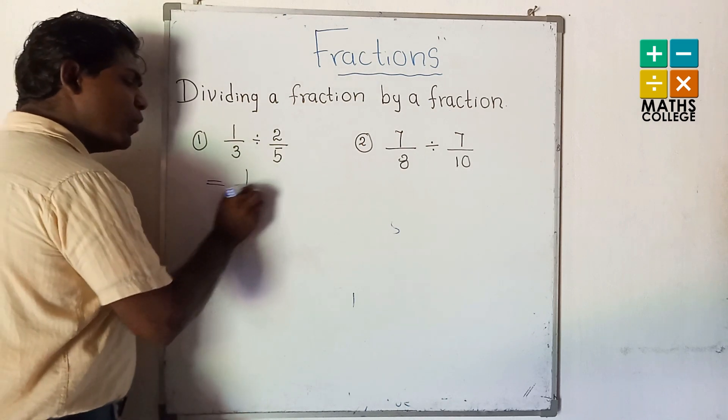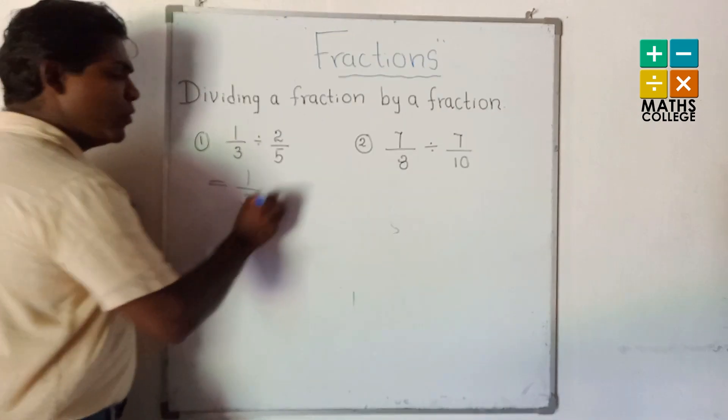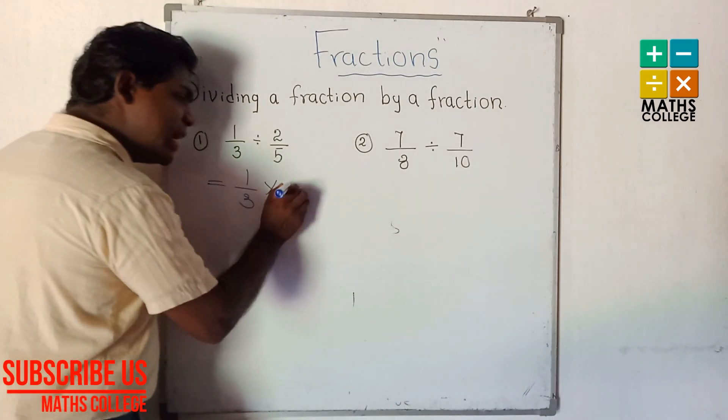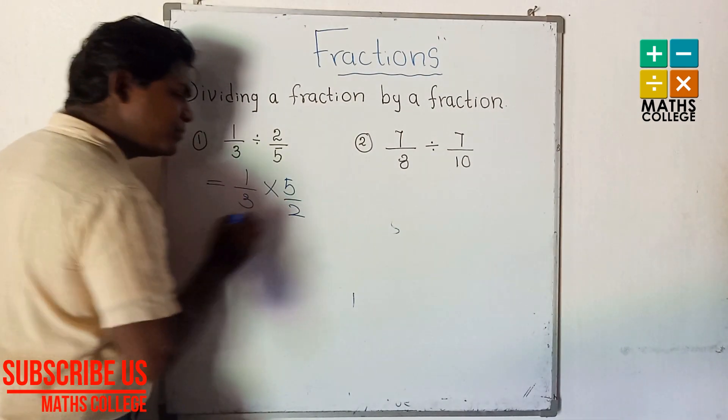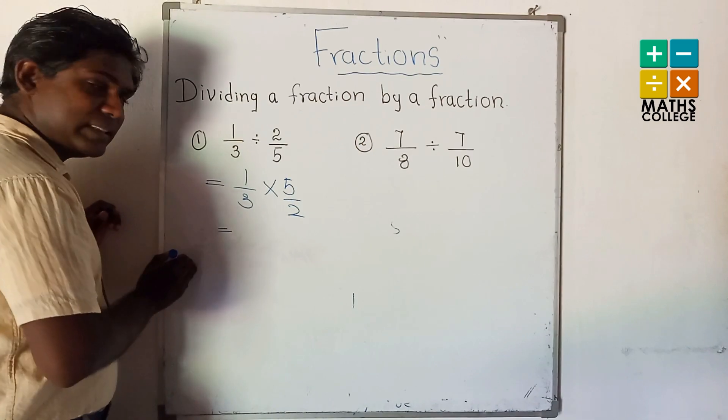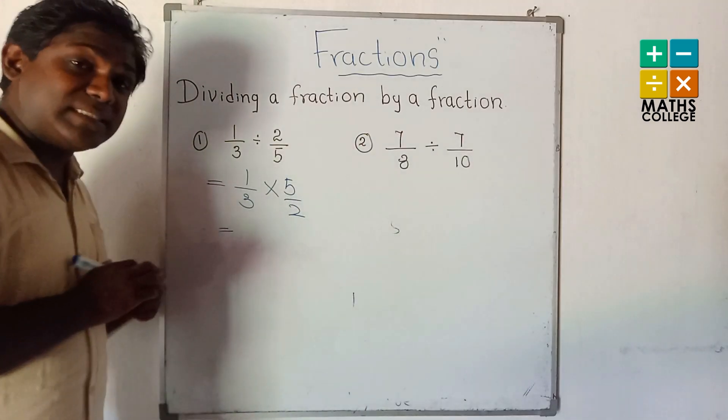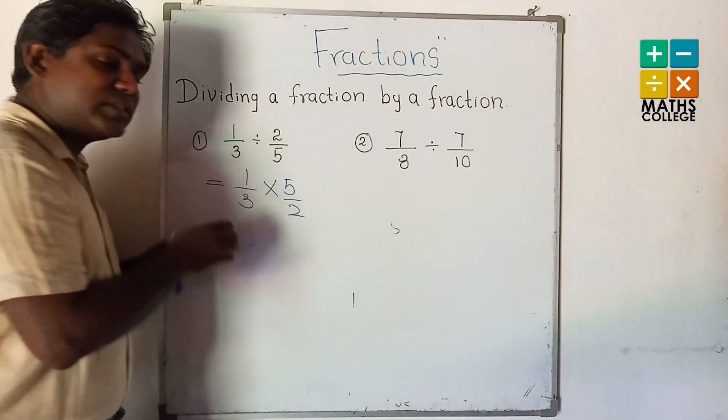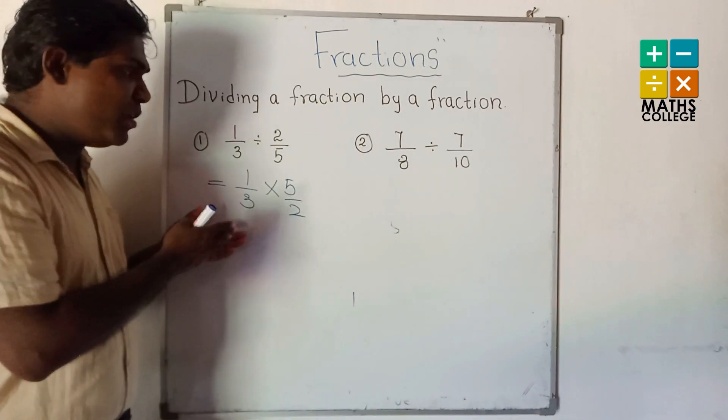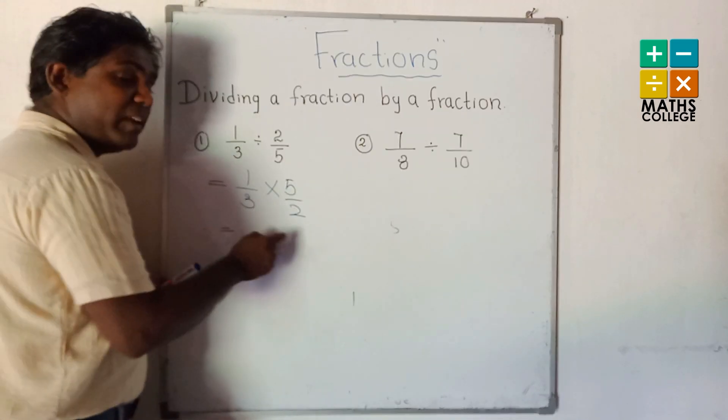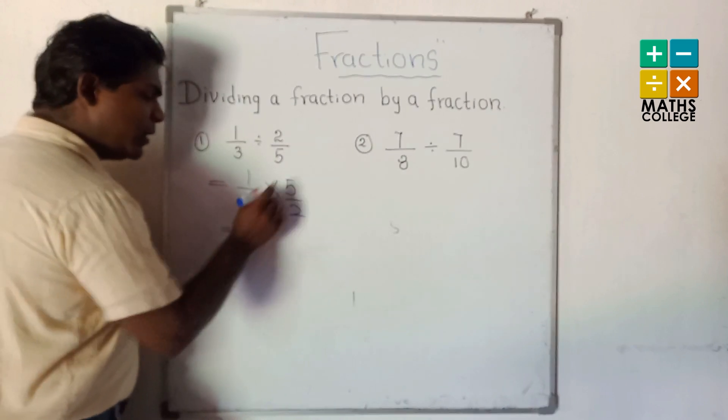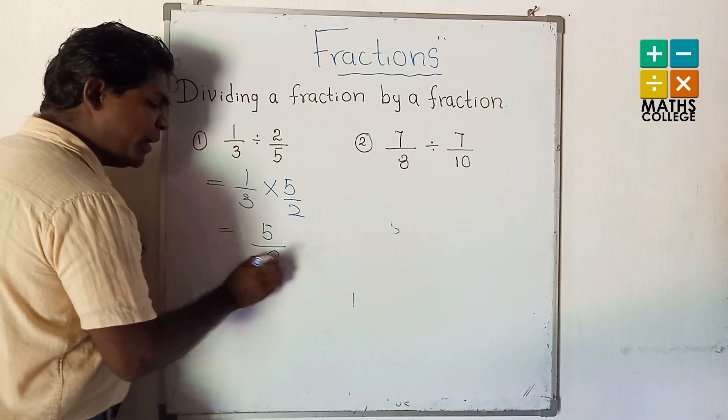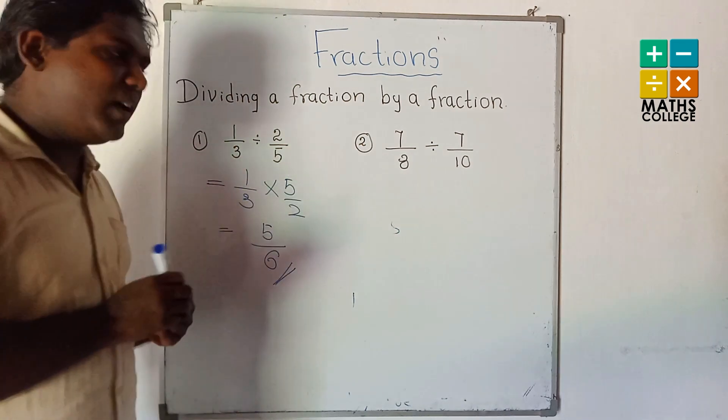Look at this very carefully. 1/3 divided becomes multiply with reciprocal. What is the answer? Then we have to check for common factors in the denominator and numerator. Here 1 and 3, 5 and 2 have no common factors. So 1 multiplied by 5 is 5, 3 multiplied by 2 is 6.